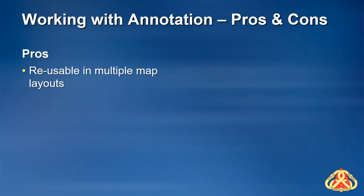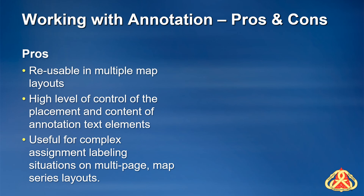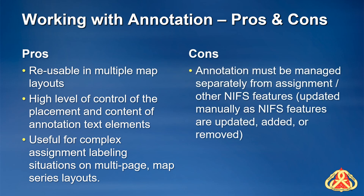In addition to reusability, the primary advantage of geodatabase annotation is the high level of control it affords users in the placement of their map labels. Users pick exactly where annotations go, and the annotations do not move as the layout is adjusted. Annotation is also especially useful in situations where a complex multi-page map series layout is being used. However, annotation feature classes must be managed separately from other map features, and annotation text will not appear or adjust when other incident features are updated or adjusted.